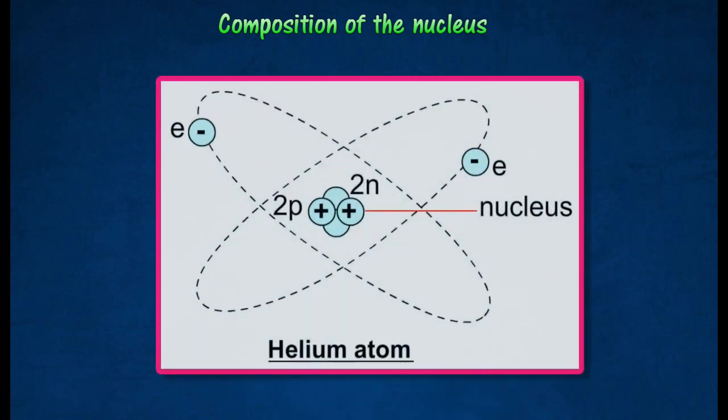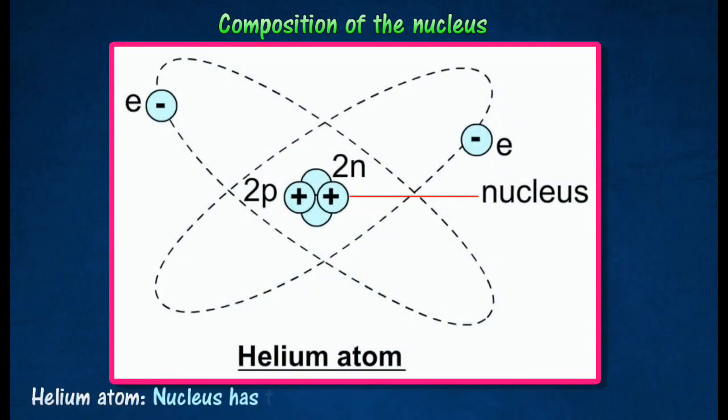The next lightest atom is the helium atom. Its nucleus has two protons and two neutrons with two electrons orbiting it.